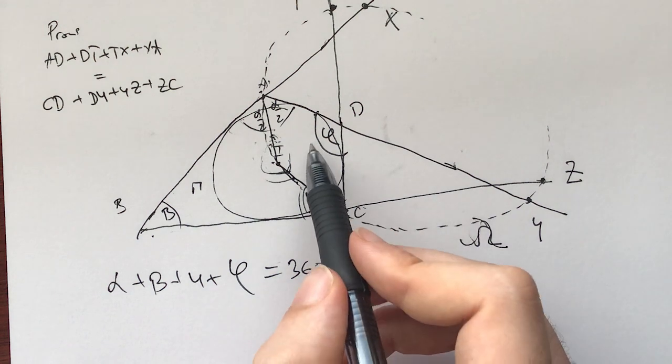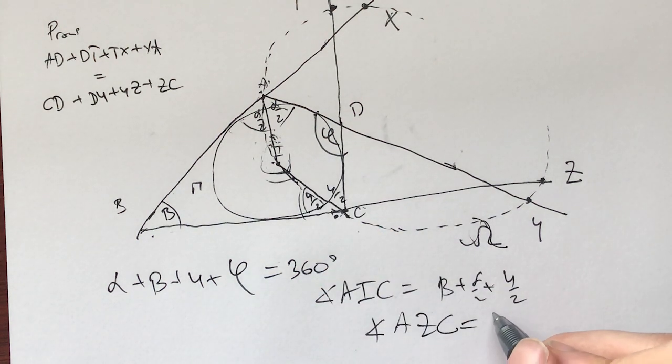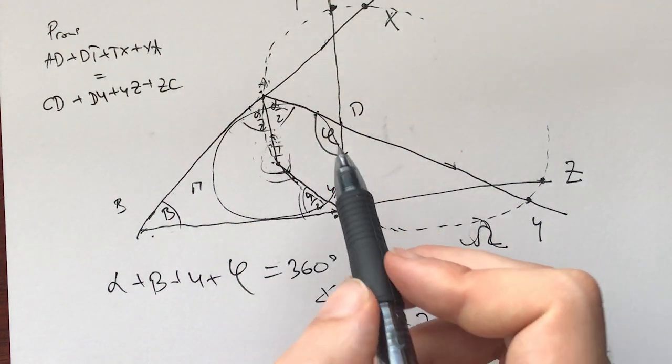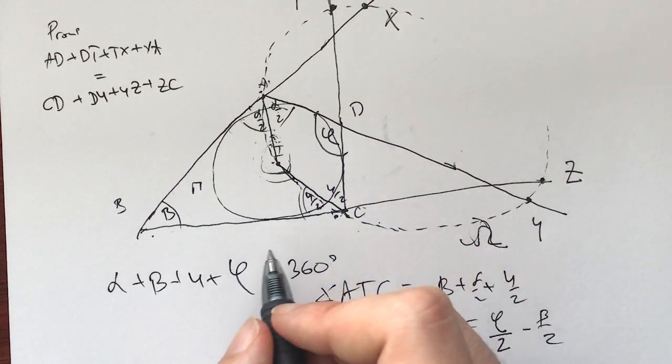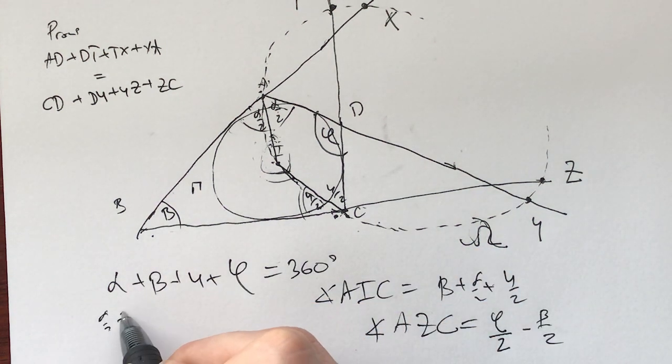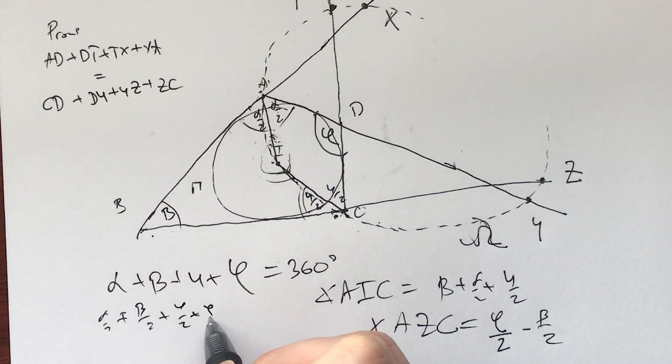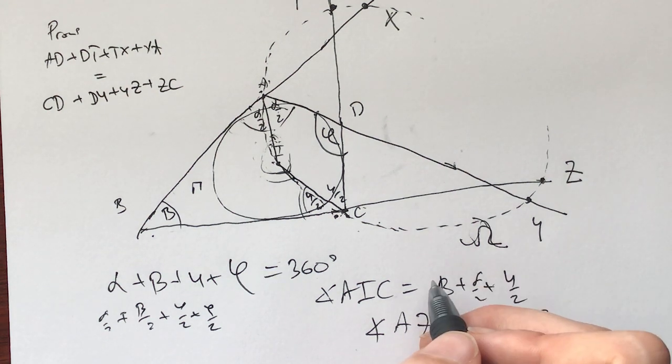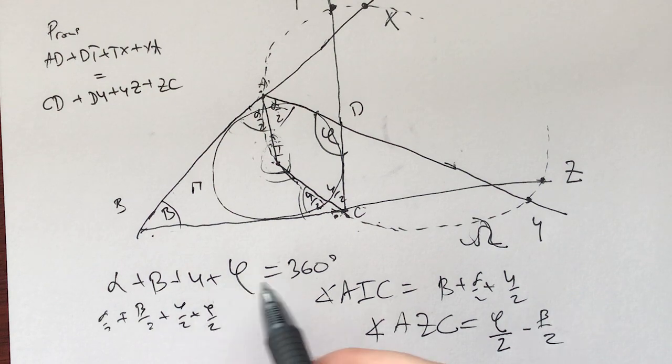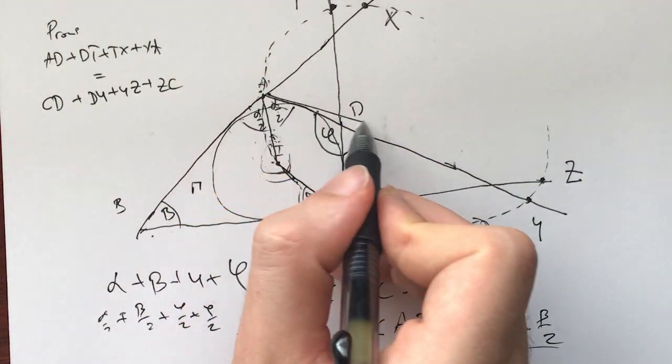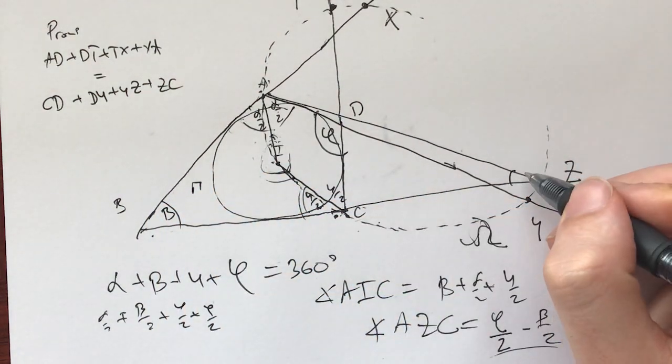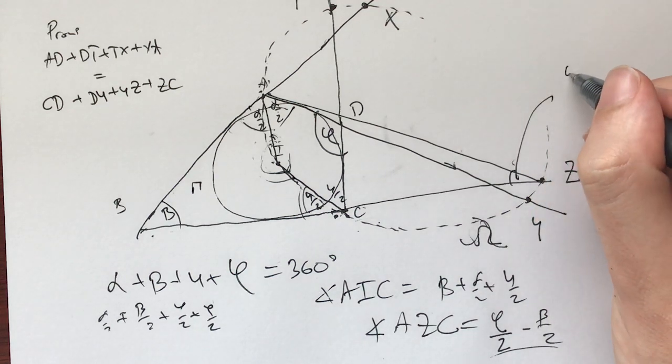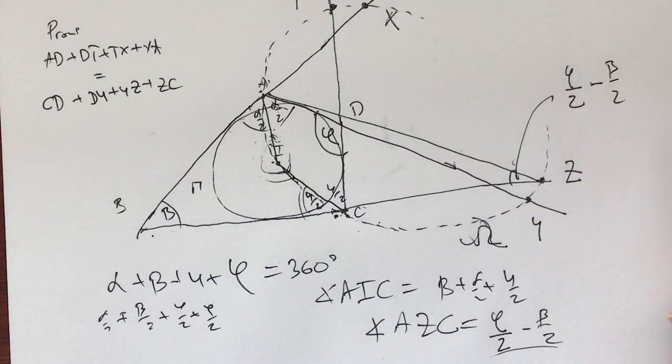The way to see this is: this angle plus this one plus this one plus this one is 360, and this is 360 minus this angle. But 360 minus this angle is equal to this plus this plus this. So you get that the angle AIC is equal to beta plus alpha half plus gamma half. If we're looking at this intersection, this means that the angle on the chord AC, AZC, is equal to half of phi minus half of beta.